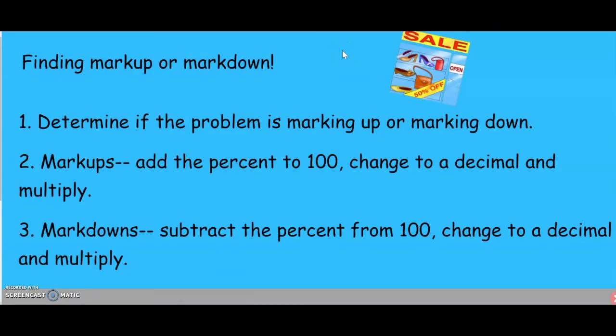As a final review, just remember that first you need to determine if the problem is marking up or marking down. If you're marking up, you add the percent to 100, change it to a decimal, and multiply. And if it's a markdown, you subtract the percent from 100, change it to a decimal, and multiply.